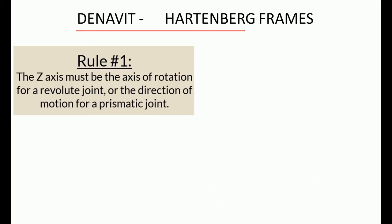The first rule states that whatever axis creates motion — whether rotational motion or translational motion — that should be the prismatic joint. There are two types of motion that can be performed: rotational motion and translational motion.